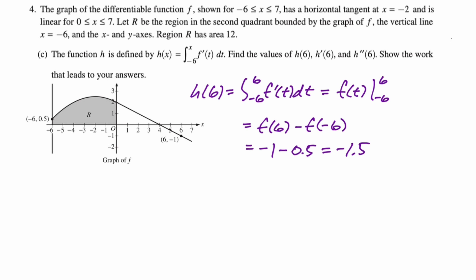For h prime, let's write down what h prime is. h prime of x is f prime of x. So we need to find h prime of six, which will just be f prime of six. So remember, f is linear between zero and seven, which means that f prime is just the slope of that line segment. So we have this line, you go down two over four, that is negative one half.